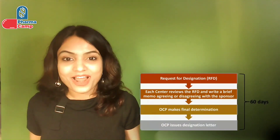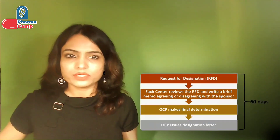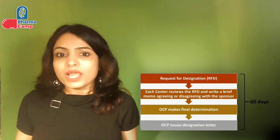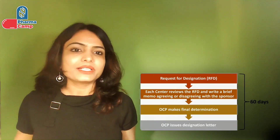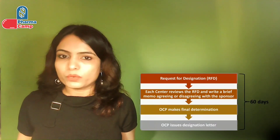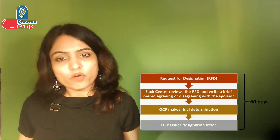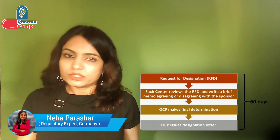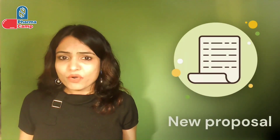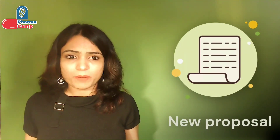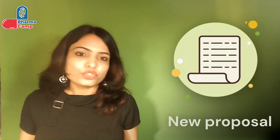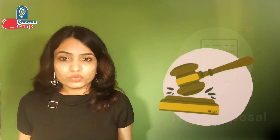Now, how does the RFD process work and what are the timelines? Once you submit your RFD application to OCP, each relevant center — CDER, CBER, or CDRH — will review it and give a memo to the Office of Combination Products on whether they agree with your proposal or not. OCP then makes a final decision and communicates it to us in the form of a designation letter. This entire process takes 60 days. If within those 60 days, before the designation letter is issued, you change your mind and want to make a new proposal, you can withdraw your application. But once OCP issues the designation letter, it is legally binding and you have to follow it.